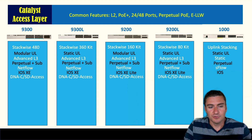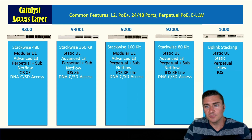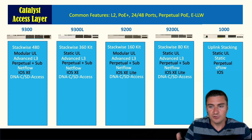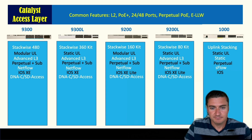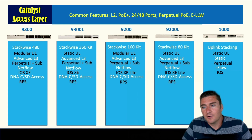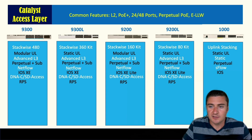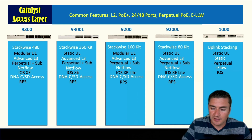DNA Center and SD-Access (software-defined access) are supported on the 9300s all the way down to the 9200Ls, but not on the Catalyst 1000. Moving to redundant power supplies: the 9300 down to the 9200s support an extra module slot in the back for a redundant power supply. There's no such option on the Catalyst 1000.